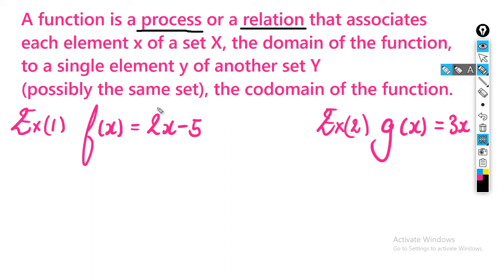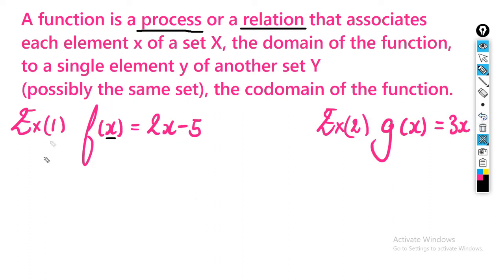That's the formal definition, but it really makes a lot of sense. Whatever x is — say x is 1 or 2 — it gets mapped onto the domain. You have a set of numbers in your domain, you put them into the function, and you get your co-domain. It's much simpler than the definition shows.